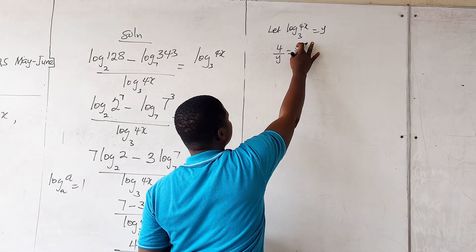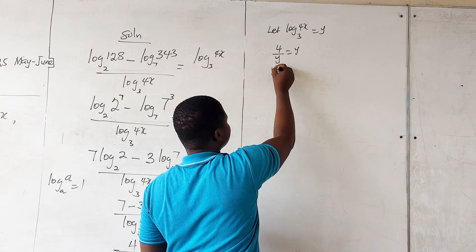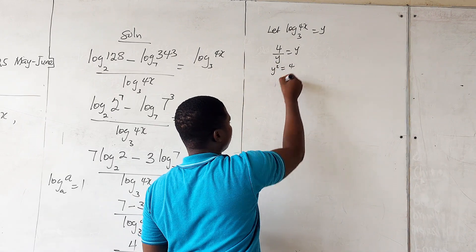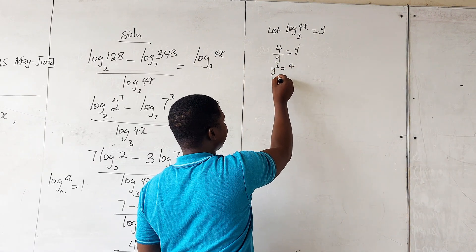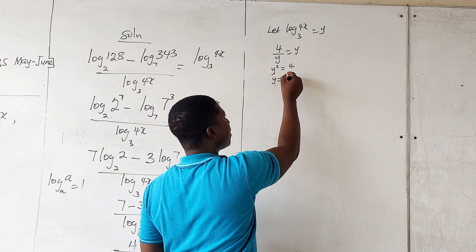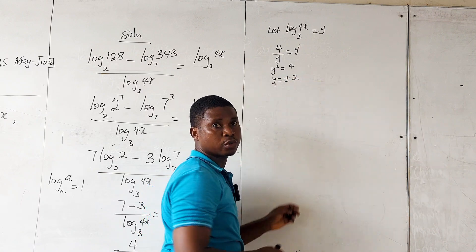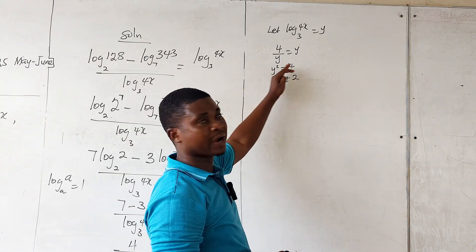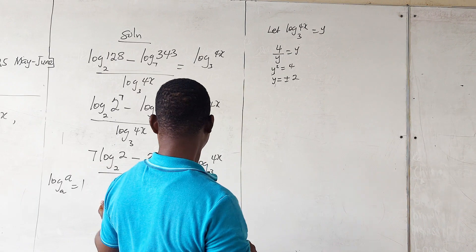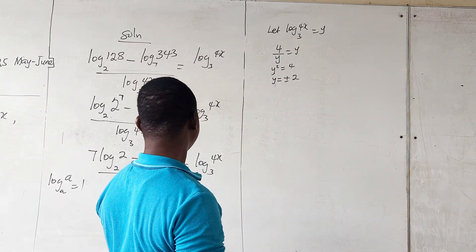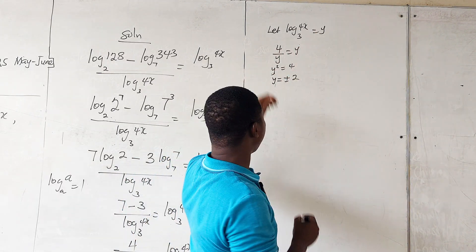Multiplying both sides by y gives us y squared equals 4, so y equals plus or minus 2.